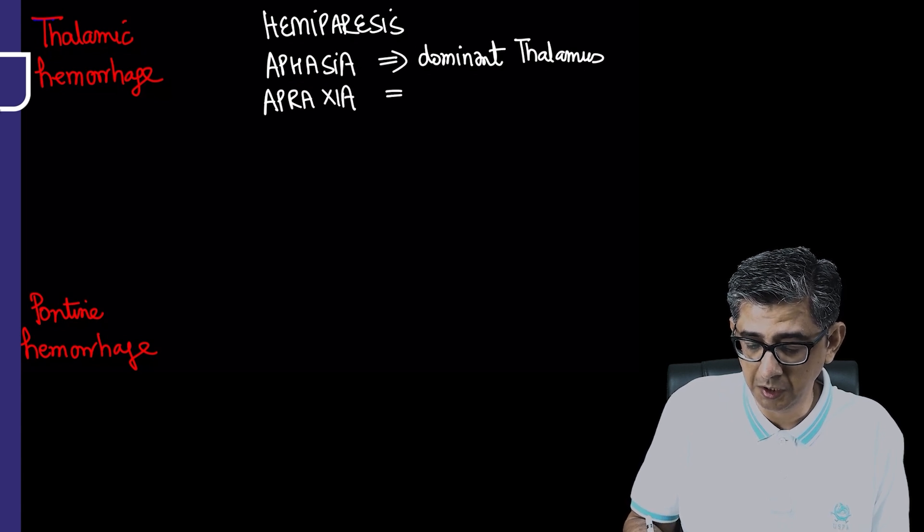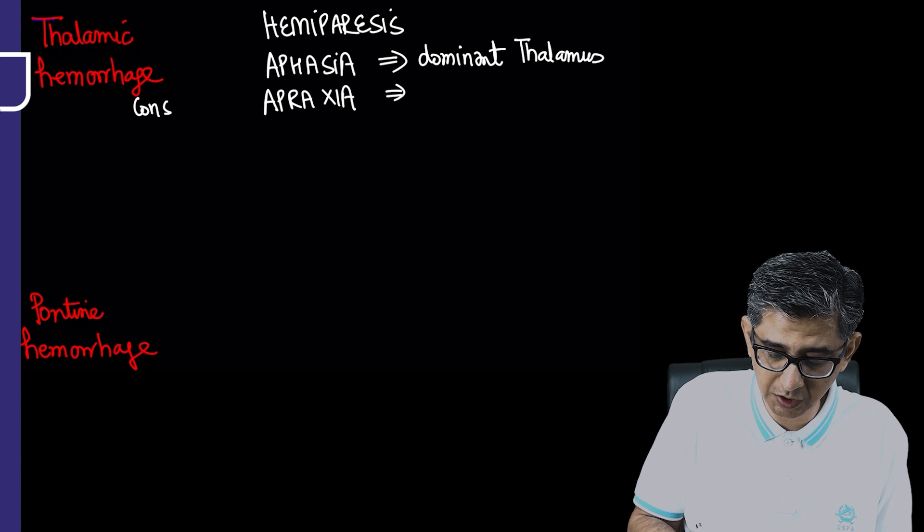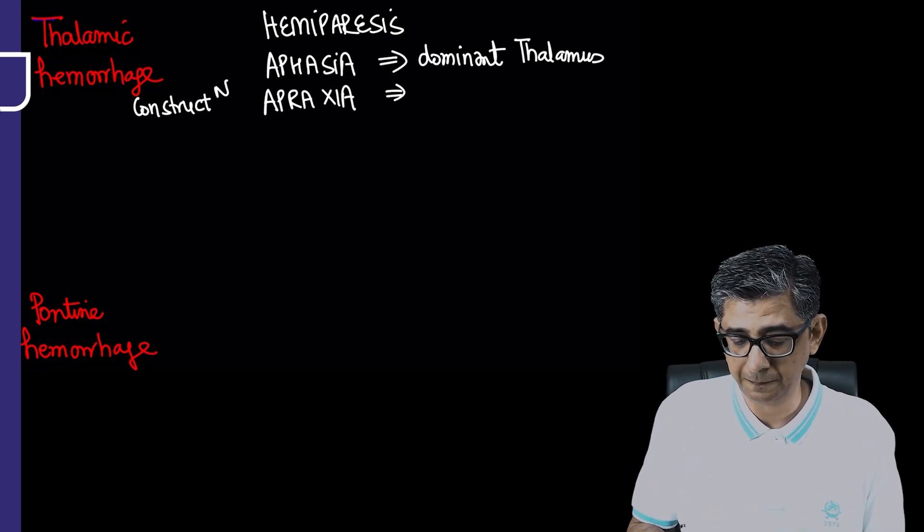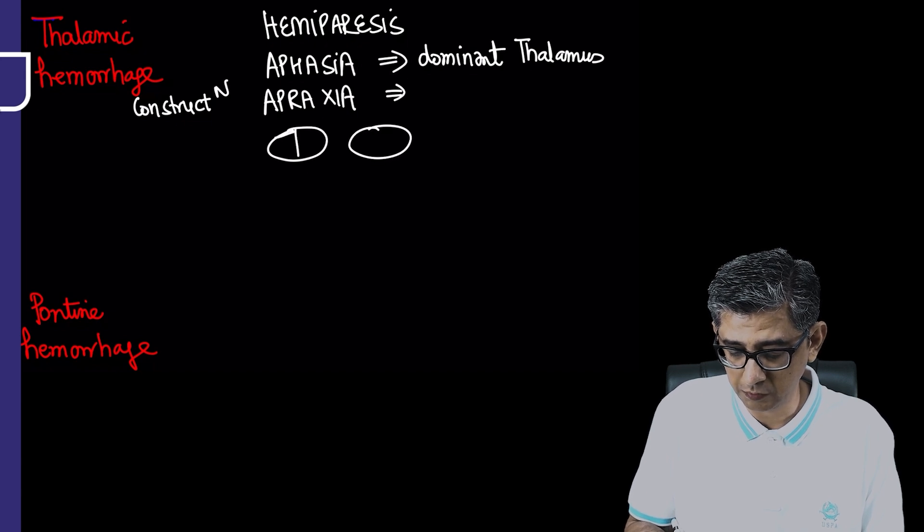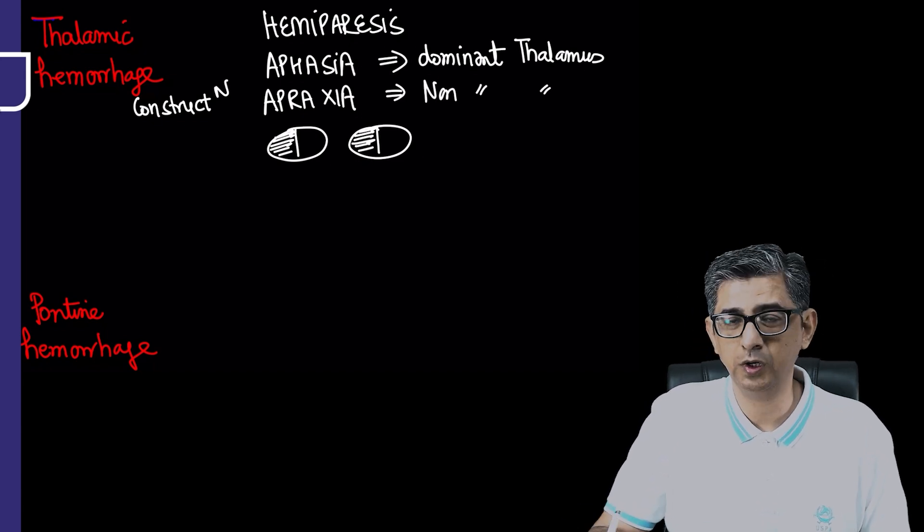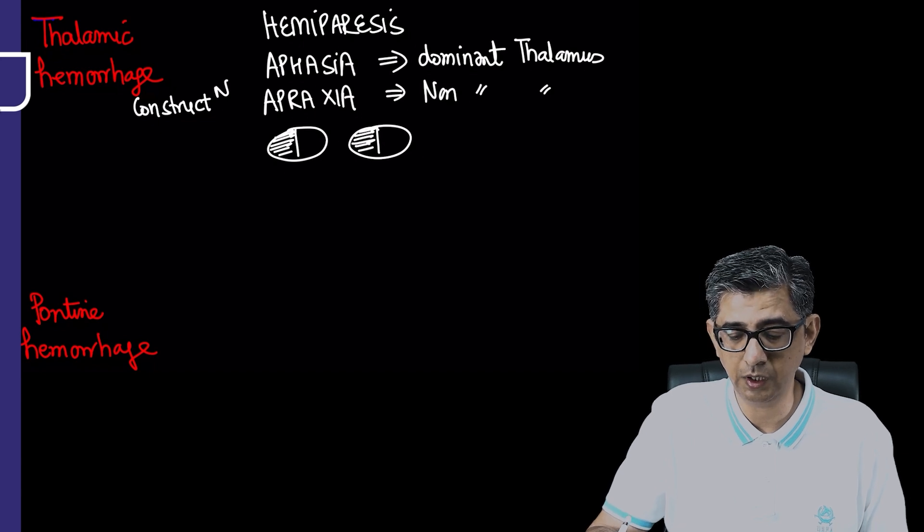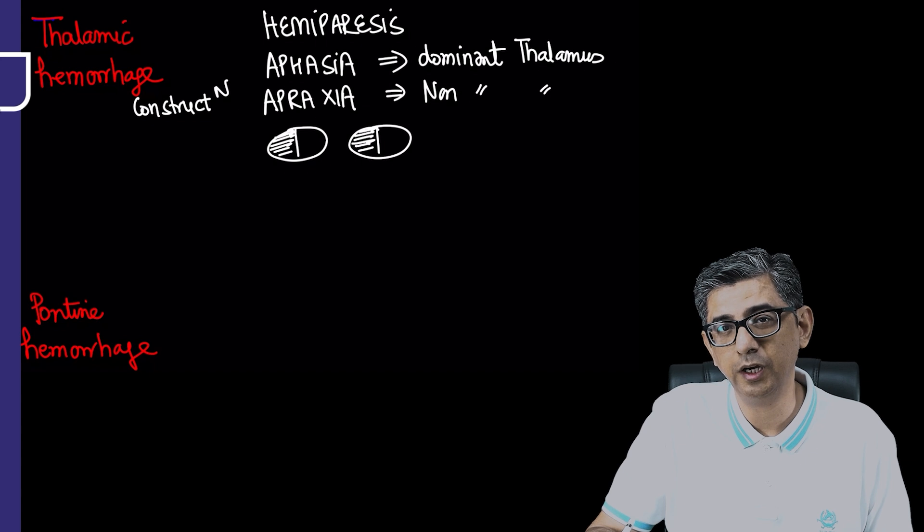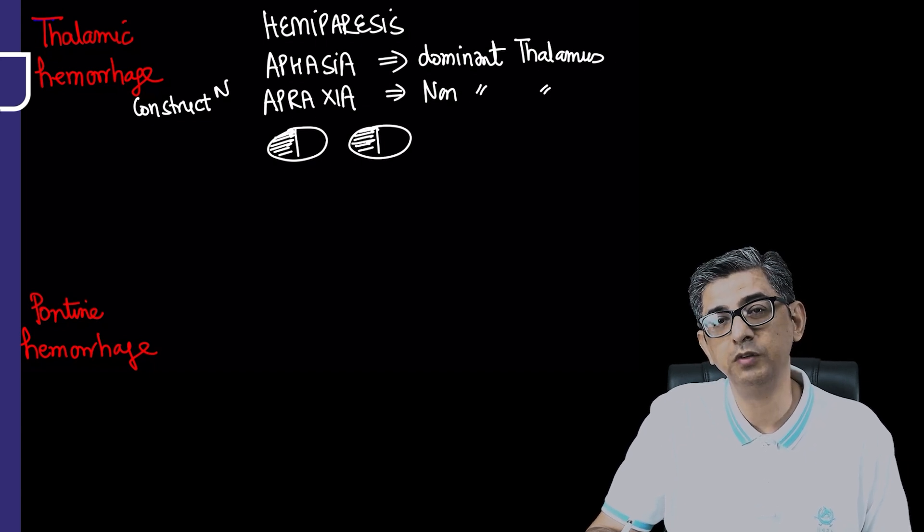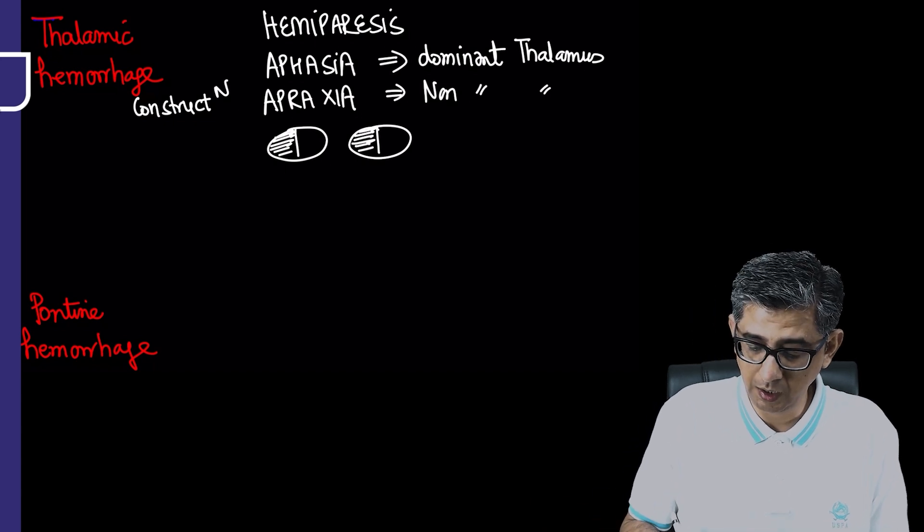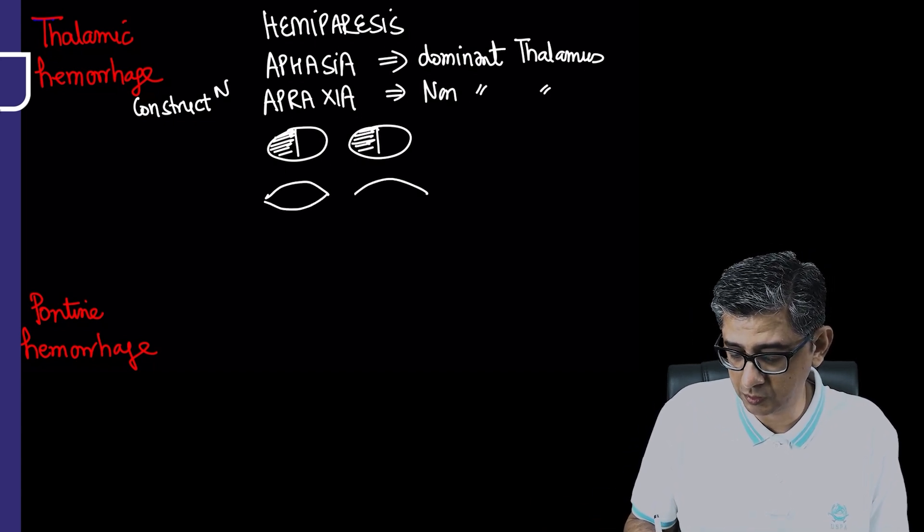If it's non-dominant involvement, there might be constructional apraxia where the person cannot draw geometrical shapes. Visual deficit occurs, mostly homonymous hemianopia. Aphasia and apraxia are traditionally read with cortical stroke, but even with thalamus involvement we read about it because thalamus is a common gateway for speech-related information.